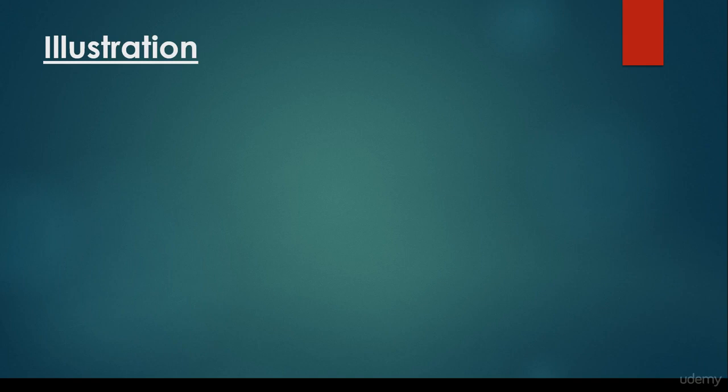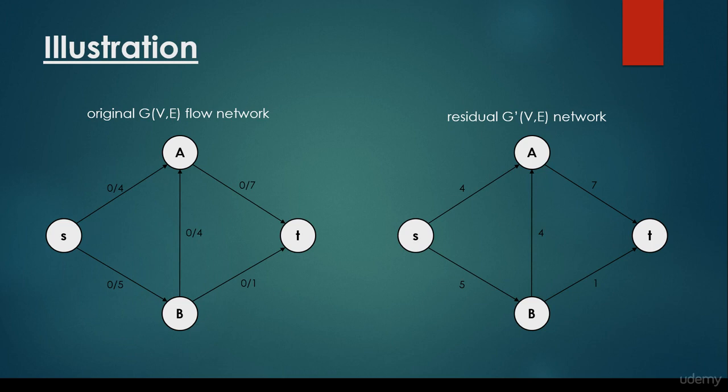In this video we are going to see a concrete example and illustration of the Edmonds-Karp maximum flow algorithm. We have the original graph G(V,E) with V vertices and E edges, and at the beginning we initialize every flow to be zero. We have the source, vertices A and B, and the sink T. It's important that at the beginning the residual graph G prime is the same as the original flow network G.